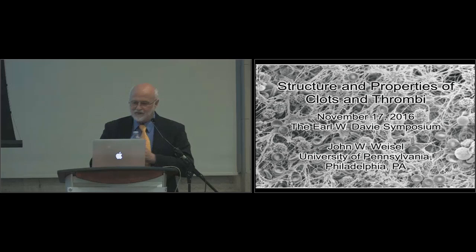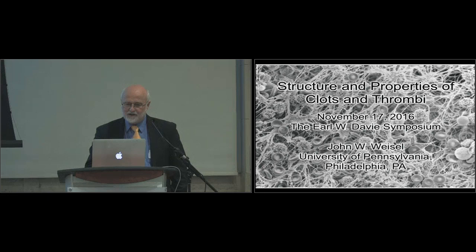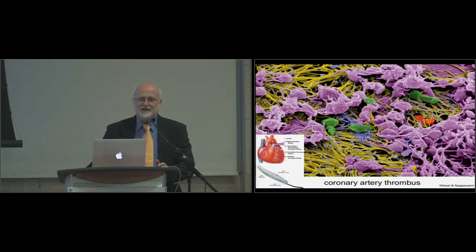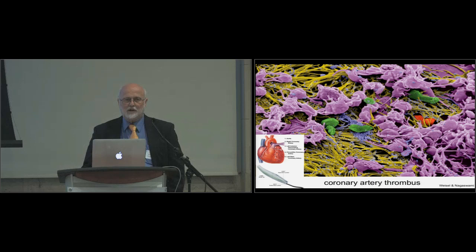Thank you very much. It's very nice to be here. The background of my title slide is a scanning electron micrograph of a whole blood clot, and you can see the various components: the platelet aggregates, fibrin fibers, and red blood cells and white blood cells that are trapped in the clot. The next slide is another scanning electron micrograph — this is part of a thrombus. Cardiologists often will go in with a catheter and aspirate thrombi to open up a coronary artery that's been blocked by a heart attack, and we've looked at these coronary artery thrombi.